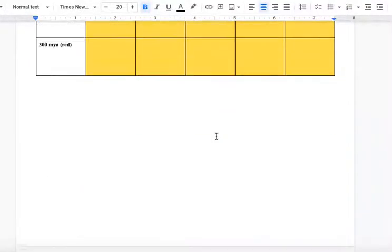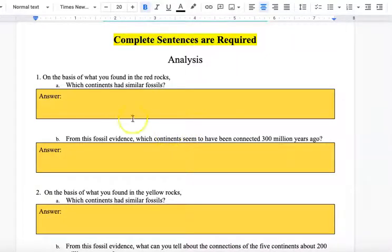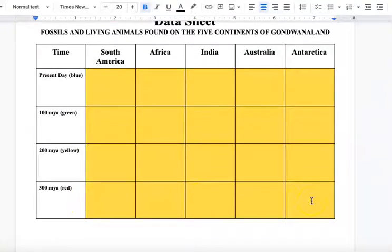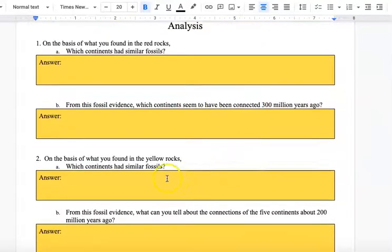Once you fill in your data and you scroll down, you're going to answer these questions. Based on your data, it says on the basis of what you found in the red rocks, which continents had similar fossils? You're going to look at your red rock layer and look at the data and say, where is there some similarities? Do we have any fossil evidence that says what was in India was in Australia? You're looking for combinations where they're identical or pretty close to being identical. And you're going to do it for each of the rock layers.